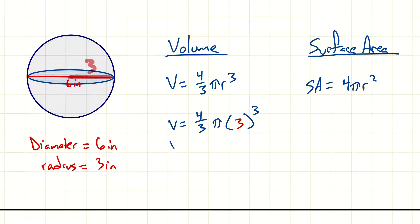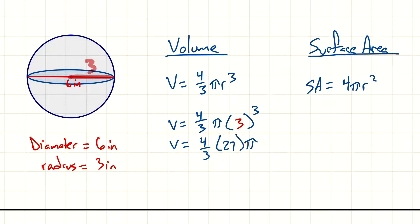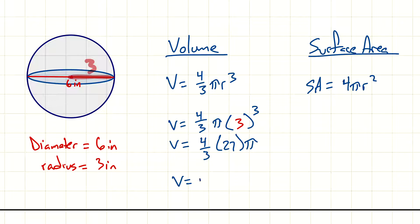When we calculate volume, we have four-thirds times three cubed pi. Three times three times three is 27. The nice part is that three does go into 27, so we can reduce: this is the same as four times nine pi. Four times nine gives us 36 pi inches cubed.